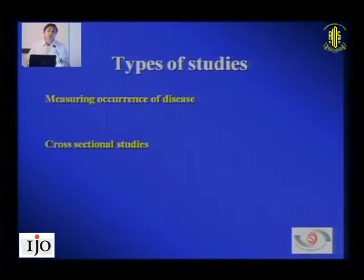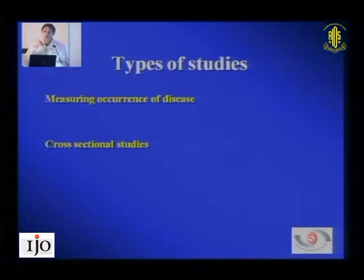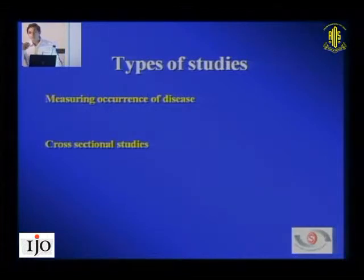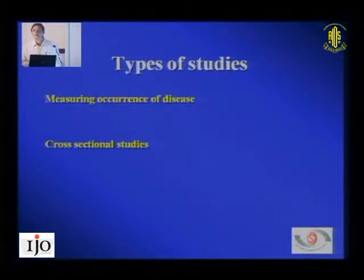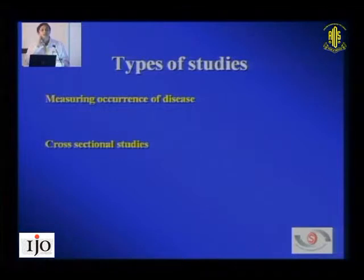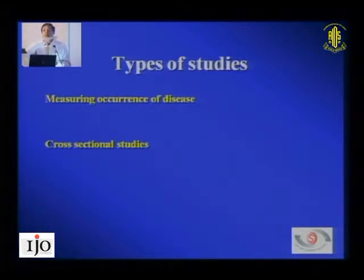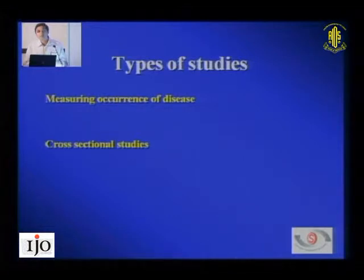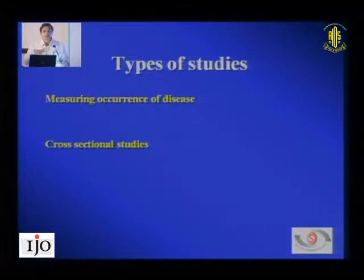Before I talk about case control and cohort in detail, let me ask two questions: what is prevalence and what is incidence? These are concepts residents often confuse. Prevalence is simple: if at one point in time I see 1,000 people and 30 have glaucoma, that is a prevalence of 3 in 100, or 3%. Incidence is different — we examine patients today, go back to the same population after one year, and count the new cases that arose in that one-year period.